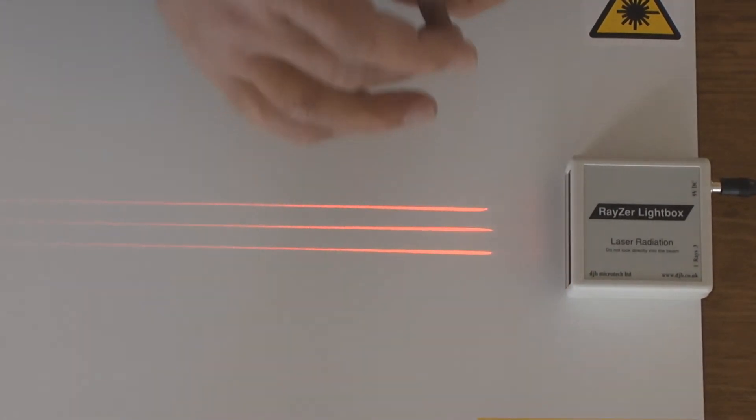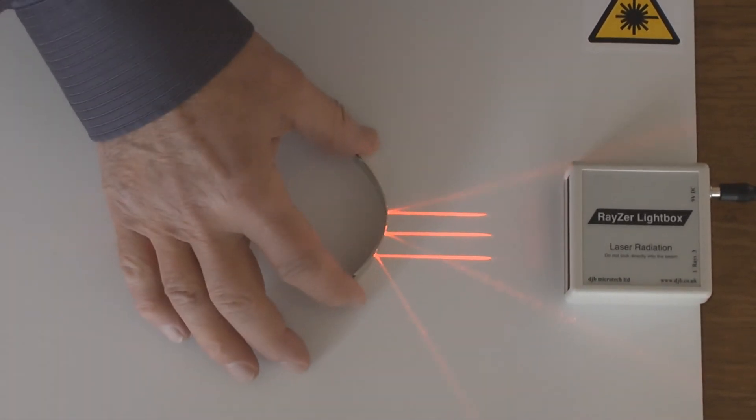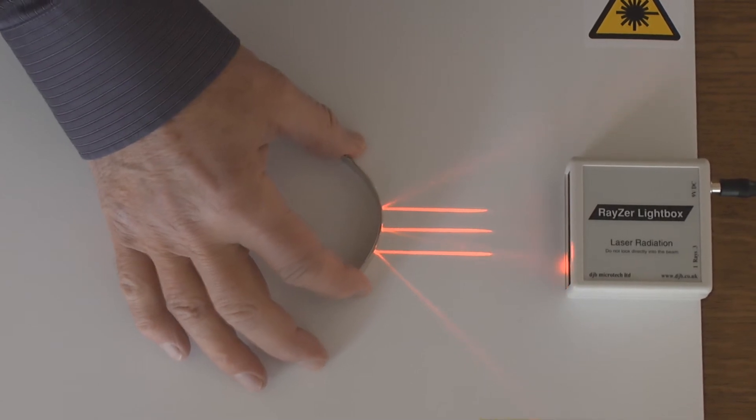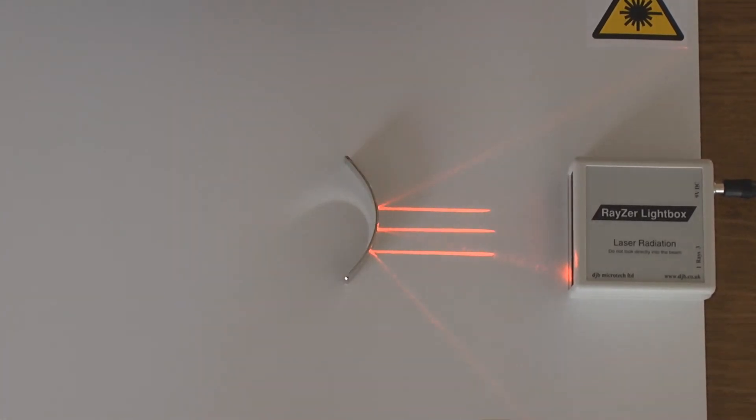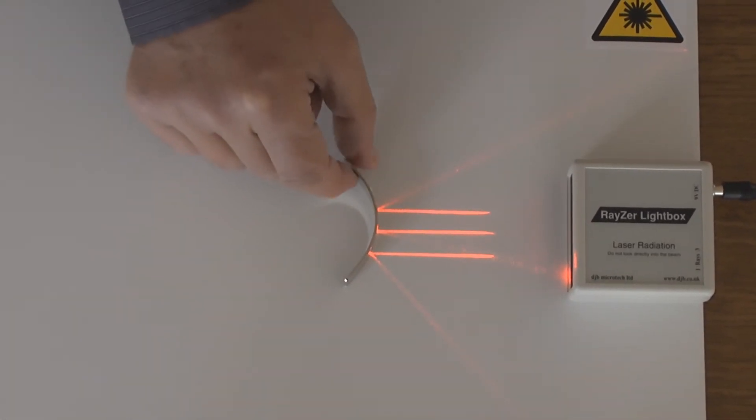If I turn the reflector around we can see that the beams are diverging.